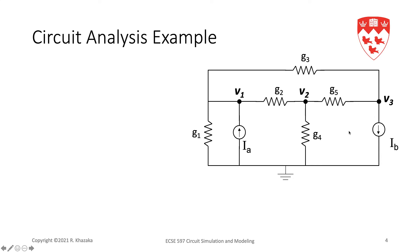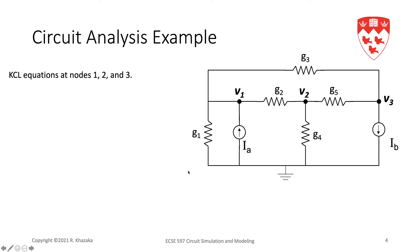Let us start with our example. In this case we have a circuit with three nodes, and the only elements we have in it are resistors and current sources. What we're going to do is write Kirchhoff's current law equations at each node — node 1, node 2, and node 3. Let's start with node 1.